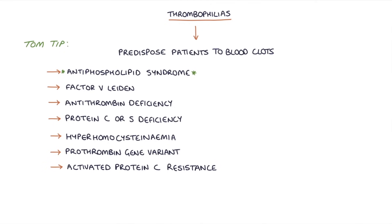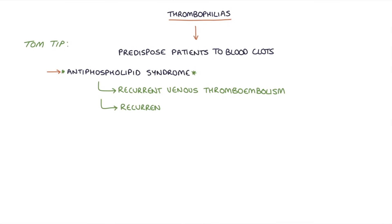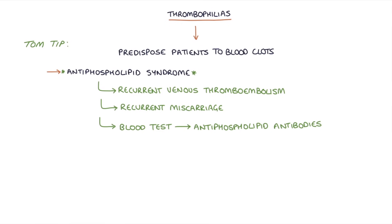A top tip: if you remember one cause of recurrent venous thromboembolism, remember antiphospholipid syndrome. The common association with antiphospholipid syndrome that you may come across in exams is recurrent miscarriage. The diagnosis can be made with a blood test for antiphospholipid antibodies.